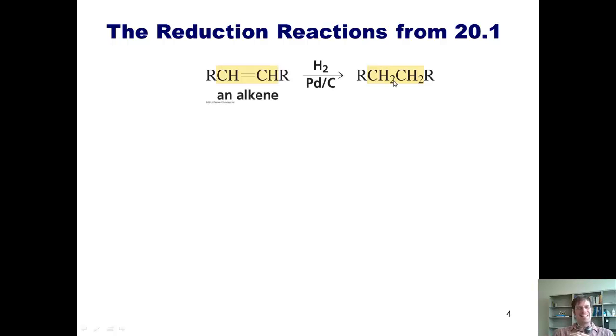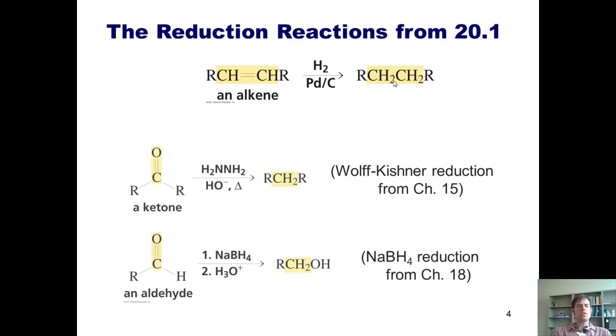So by two definitions, we can see that this is a reduction reaction. Here are some more reactions covered in section 20.1 that we've also learned from previous chapters. As you may remember, we can take a ketone and react it under these conditions to completely remove this oxygen and replace it with bonds to hydrogen. This reaction is called the Wolff-Kishner reduction.